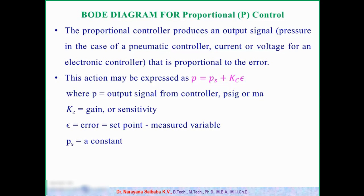Mathematically, the proportional controller response can be written as P = Ps + Kc·E, where P is the output signal from the proportional controller, Ps is the output signal when the system is under steady state condition, Kc is the gain of the proportional controller, and E is the error — the deviation from the set point value.